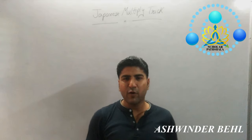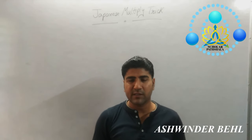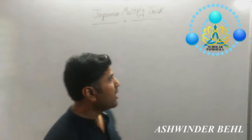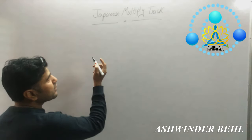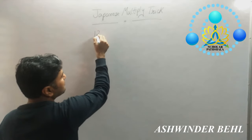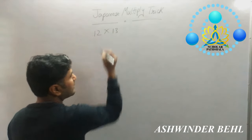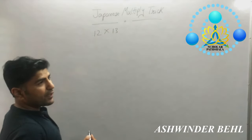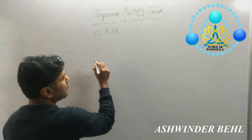Hello Friends! Today our topic is Japanese Multiplication Tricks. Suppose if we have two numbers, that is 12 into 13. How we can solve?